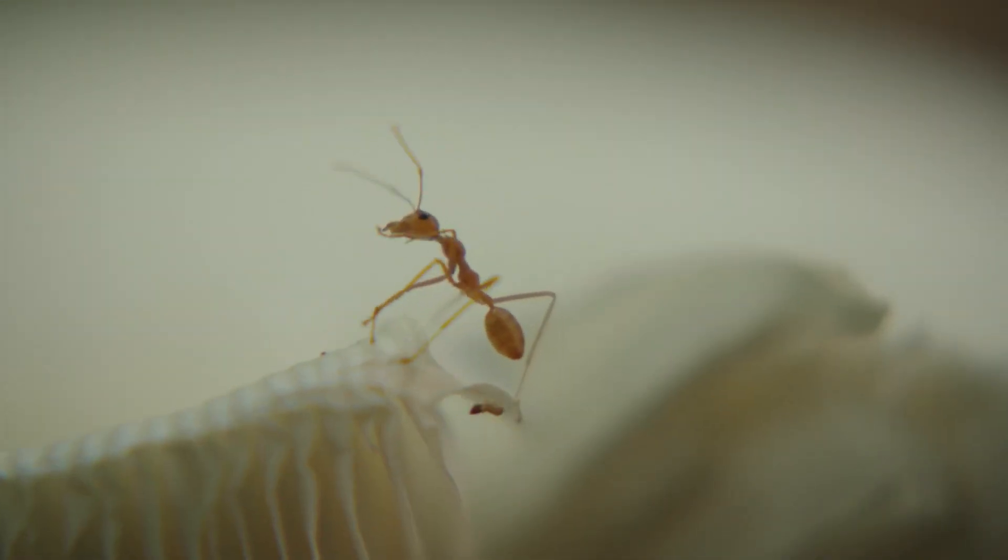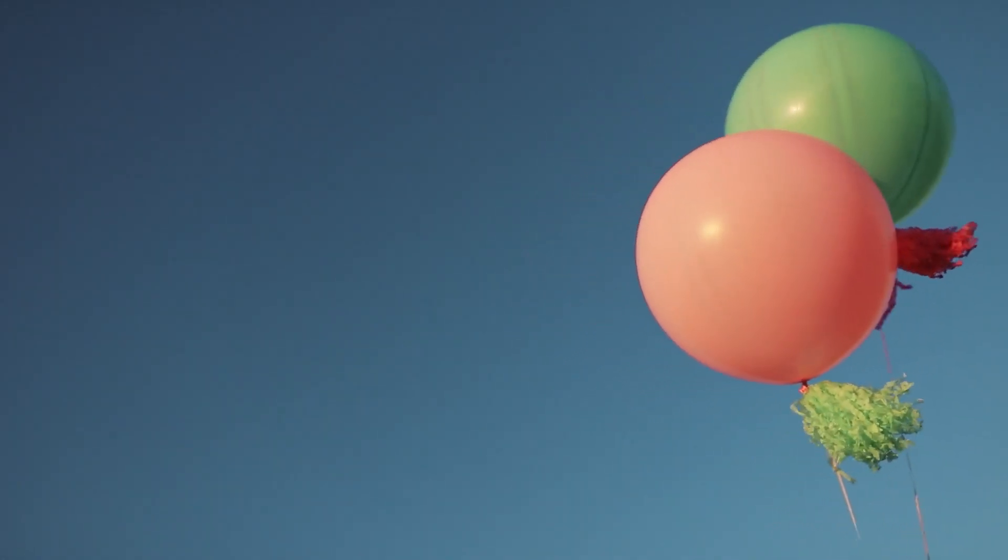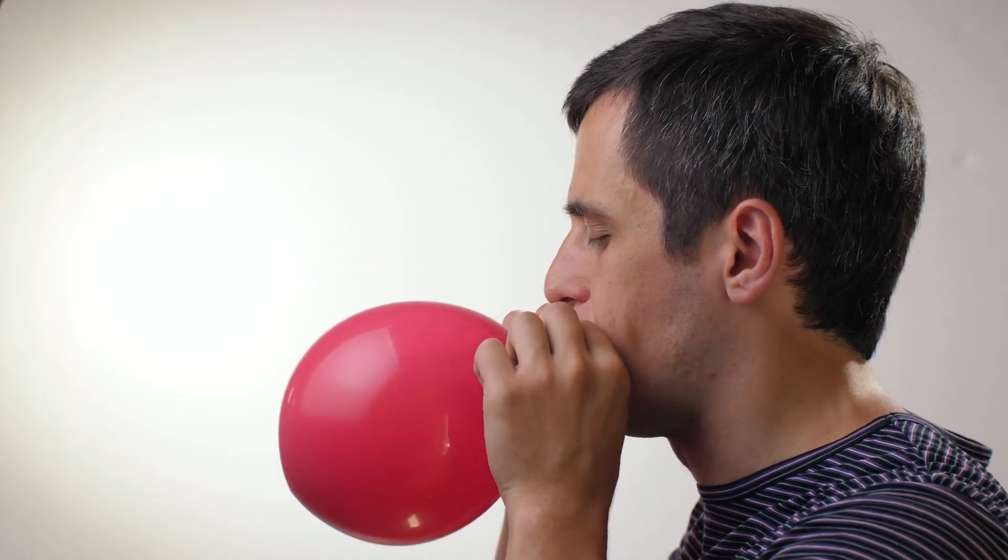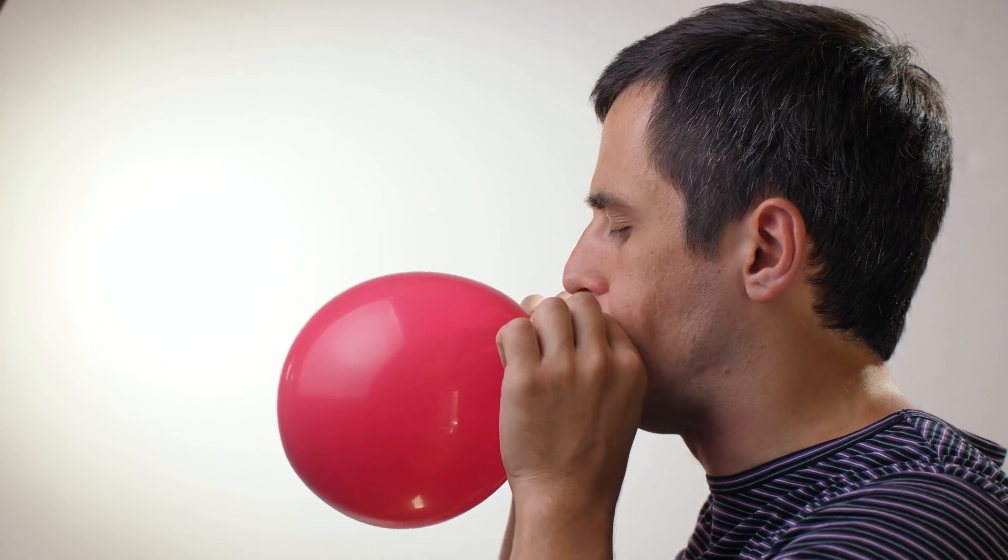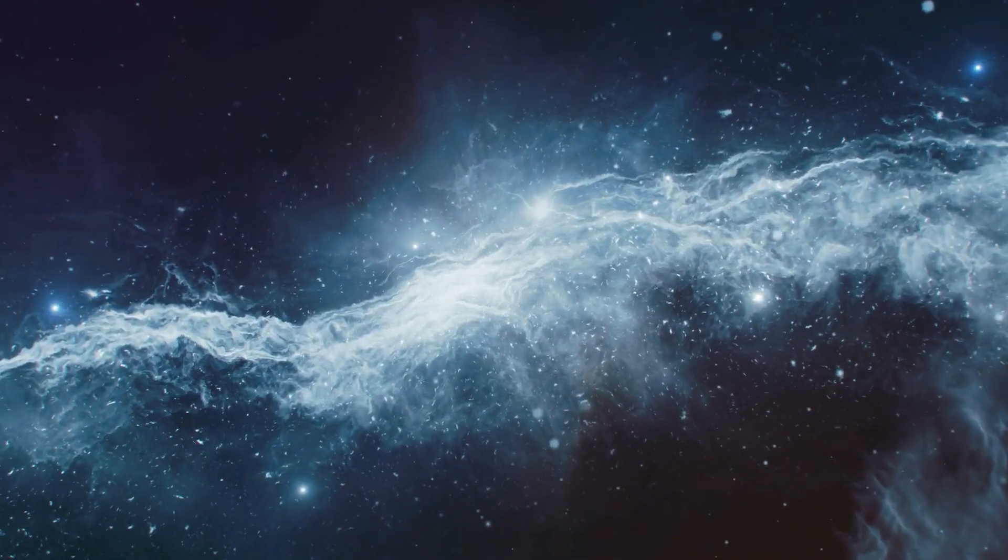If one were to place the little creepy crawly on the surface of a balloon, it would run for any length of time in any direction imaginable without ever encountering a defined edge. Consequently, it would appear to the insect as if it were moving on an infinitely large structure, even though this is of course not true in the case of a balloon.